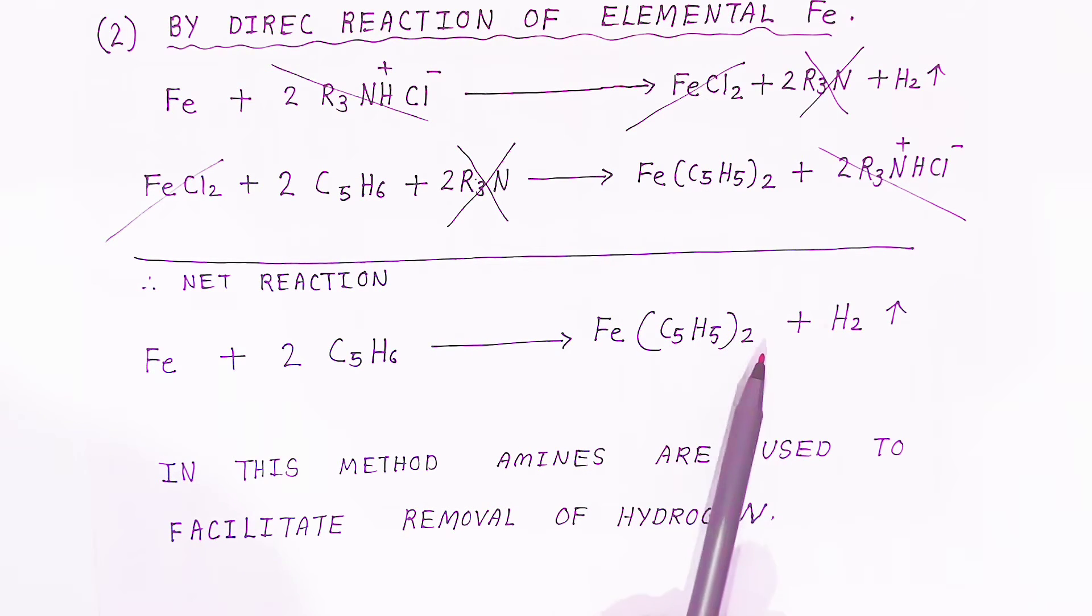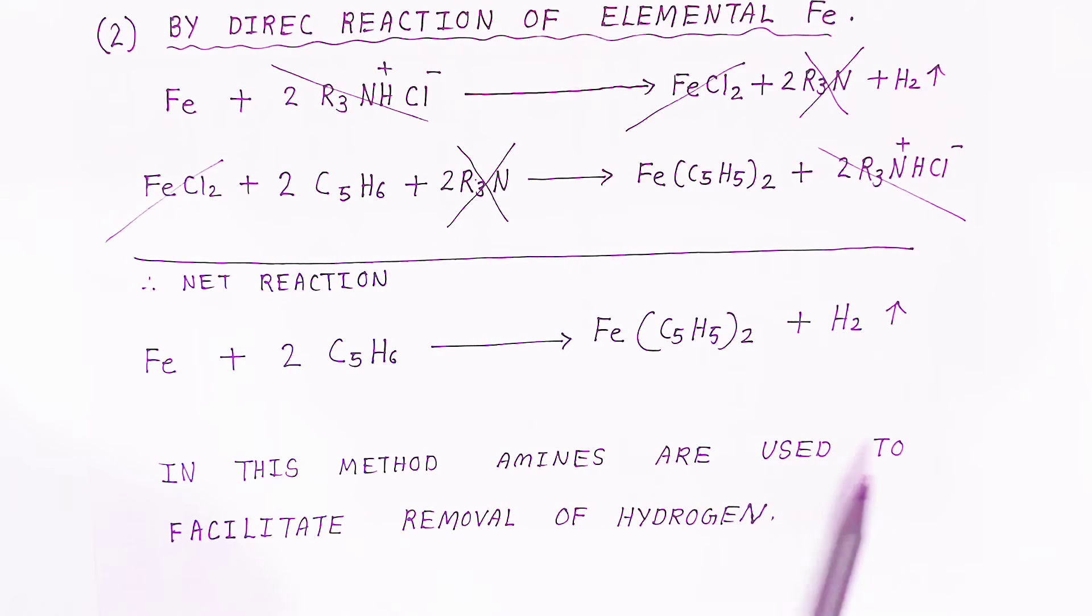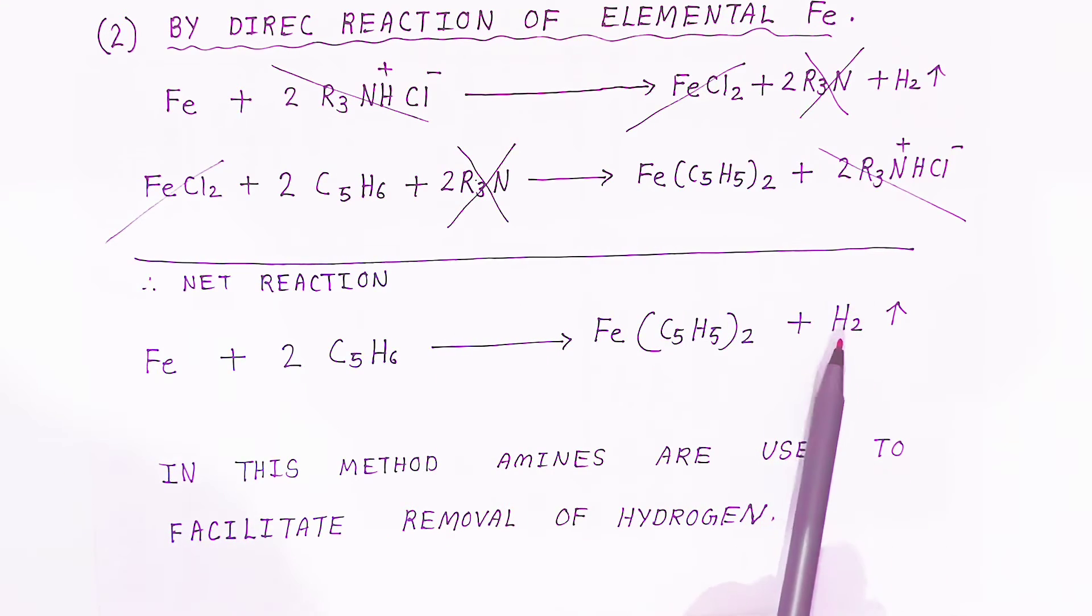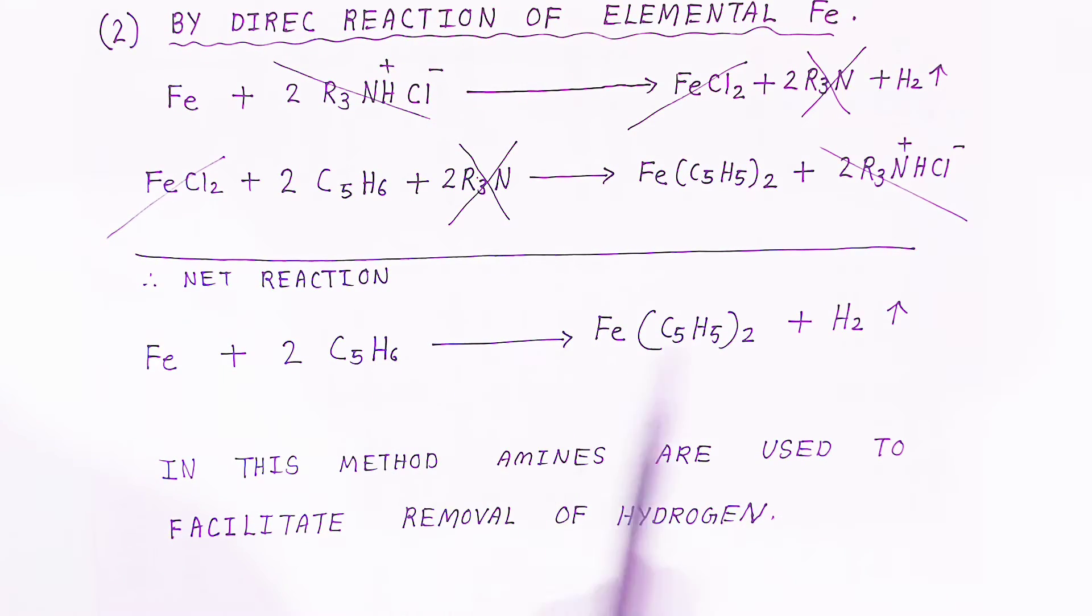At the reactant side you are getting Fe plus C5H6, and at the product side you are getting ferrocene Fe(C5H5)2 plus hydrogen gas. In this method, amines are used to facilitate removal of hydrogen.